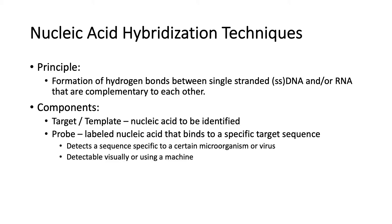Let's first take a look at nucleic acid hybridization techniques. These techniques utilize the formation of hydrogen bonds between single-stranded DNA and/or RNA that are complementary to each other. These techniques usually have two components. First, we have the target or the template, and this is the nucleic acid to be identified. This can come from a variety of sources — for example, directly from a patient sample or from a secondary culture.